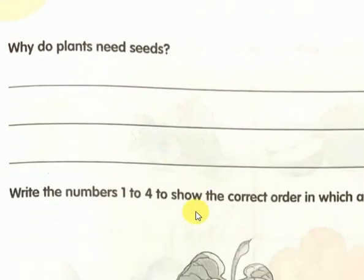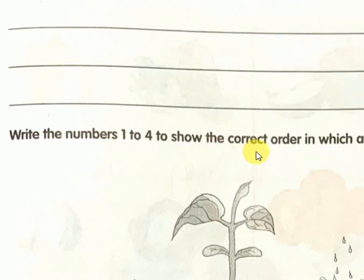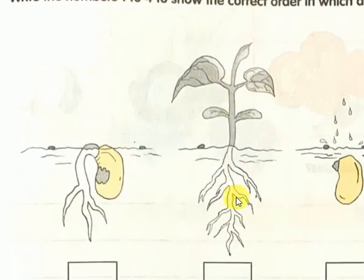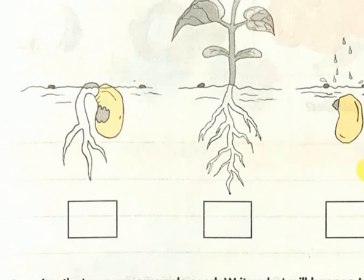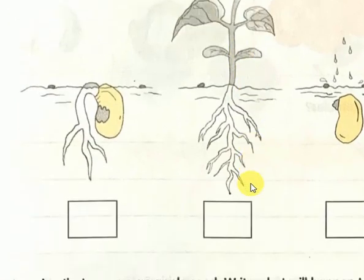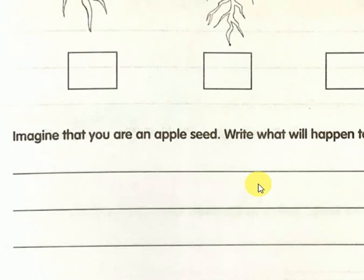The second question: write the numbers 1 to 4 to show the correct order in which a seed grows into a plant. Look at the picture — it is not in proper order. You have to arrange it correctly. First: we sow the seed. Second: root fixes the plant into the soil. Third: sprout. Fourth: a complete plant. Question three: imagine you are an apple seed — what will happen to you once you are sown in the soil? Write the stages.